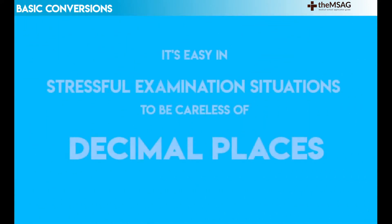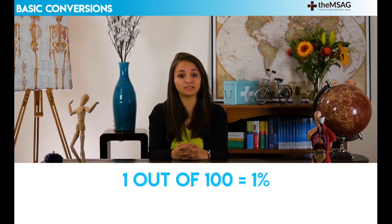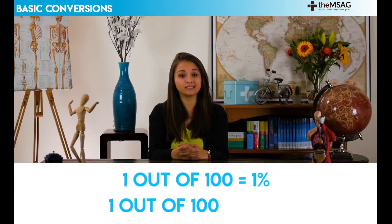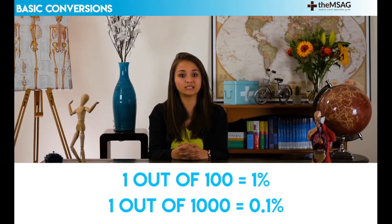Also, it is easy in a stressful examination situation to be careless with decimal places. Be cautious with this. For example, 1 out of 100 is 1%, and 1 out of 1000 is 0.1%. Take an extra second or two to focus on the number itself within the question which you need to convert, to avoid careless errors.